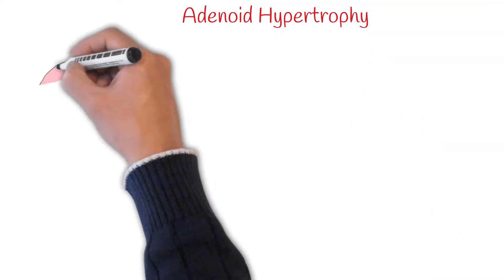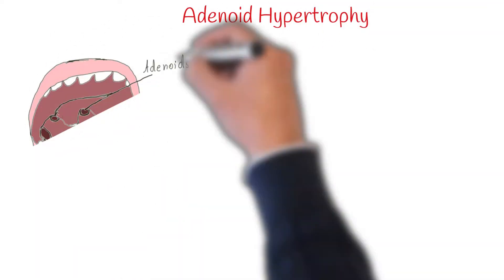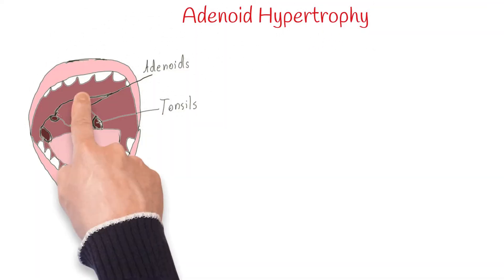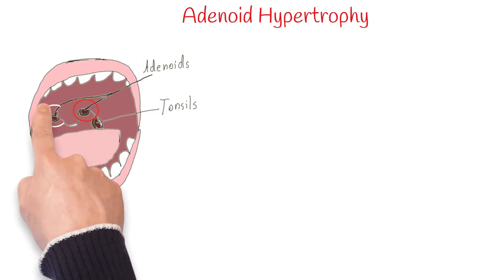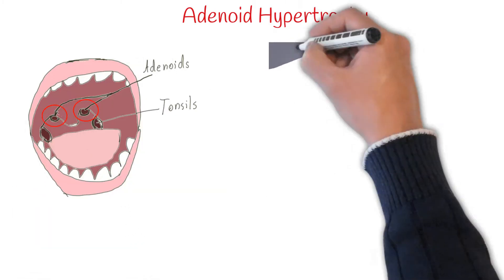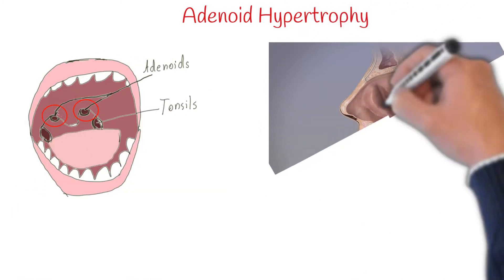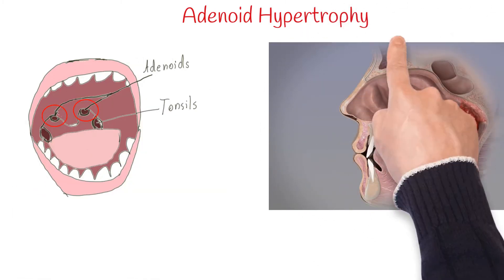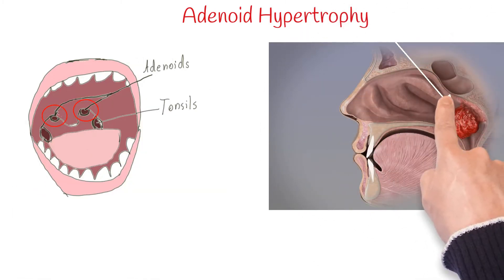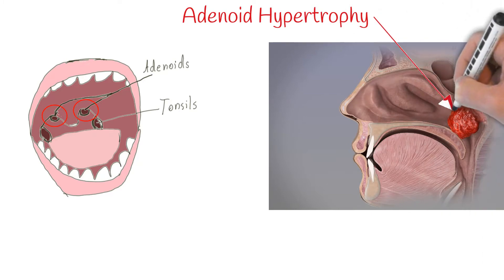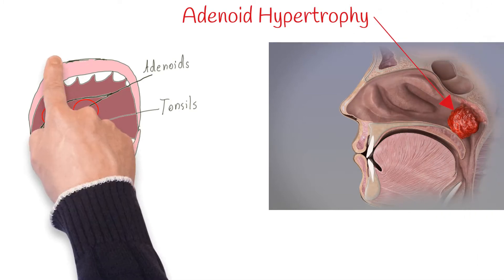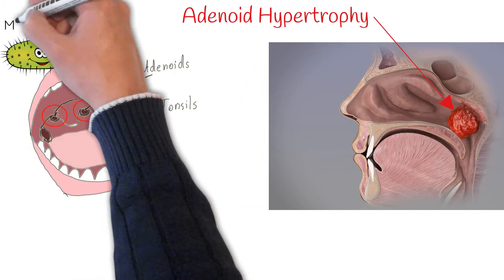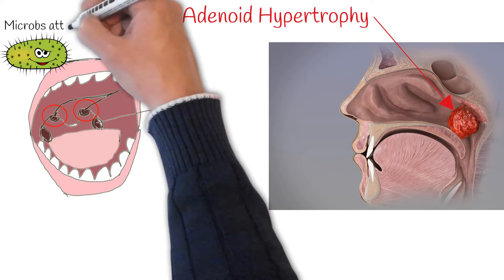The adenoid, also known as the pharyngeal tonsil, is the superior most of the tonsils. It is located behind the nasal cavity, in the roof of the nasopharynx. When this pharyngeal tonsil is abnormally enlarged, it is called adenoid hypertrophy.